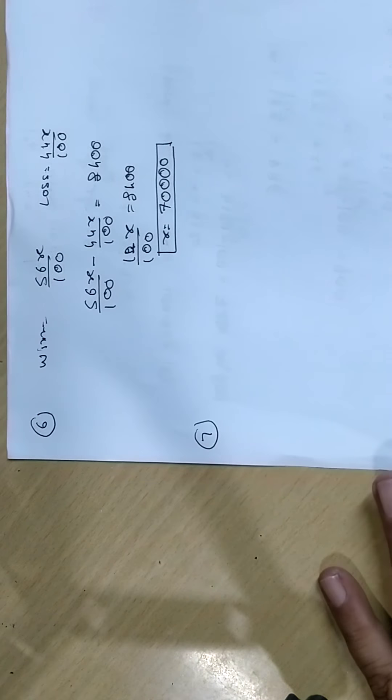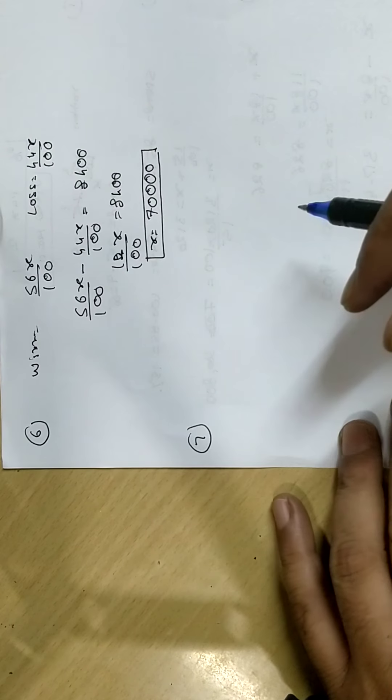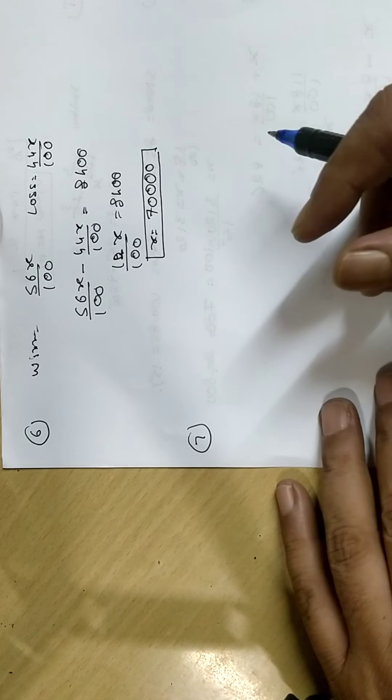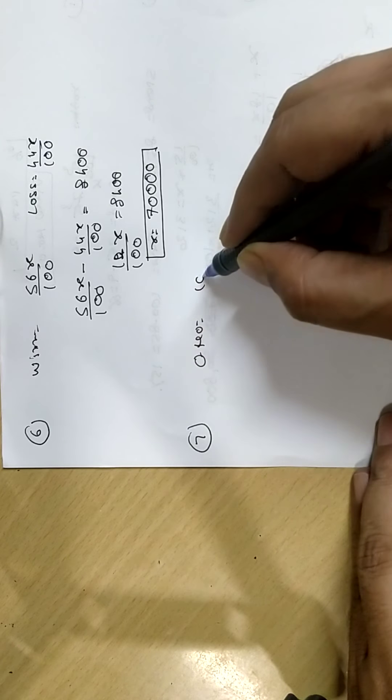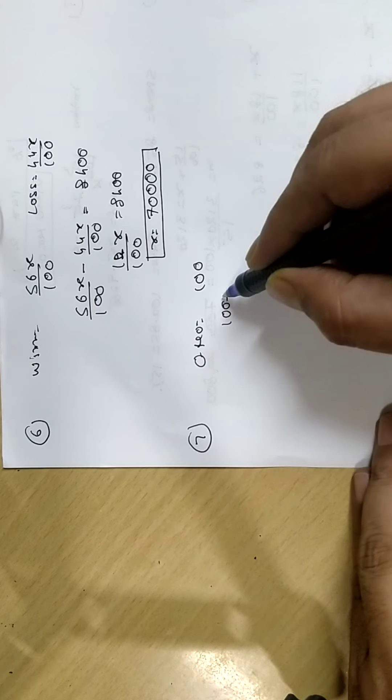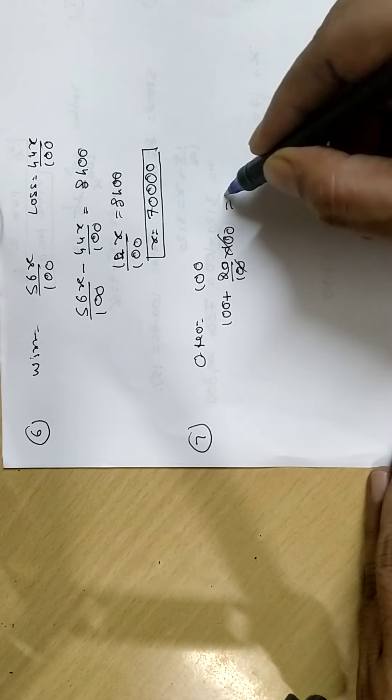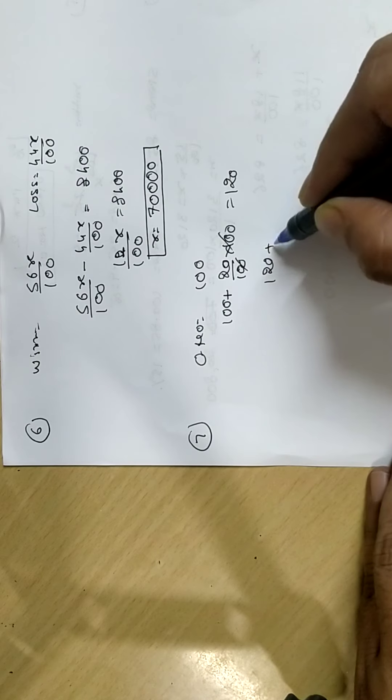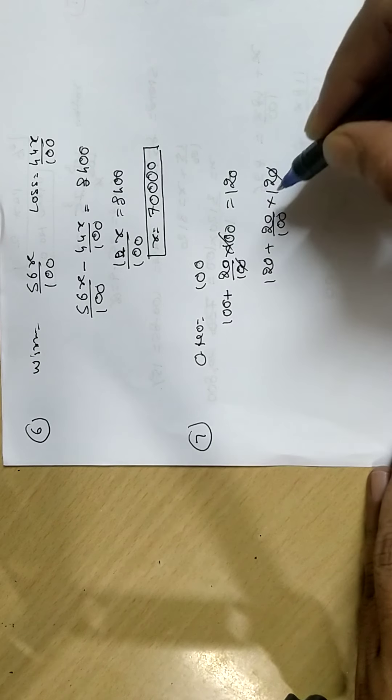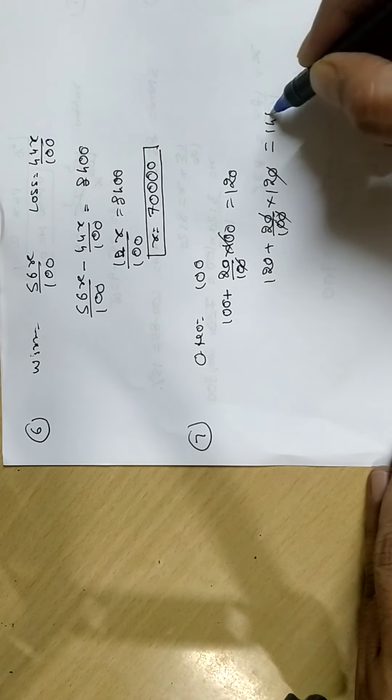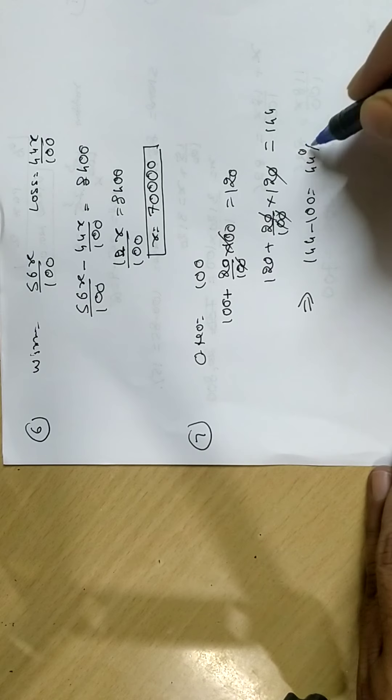Number 7. Number increased by 20%, and whatever answer you get, that again increased by 20%. So, let original number be 100. When 100 you increase by 20%, you get 120. Now, 120 you again increase by 20%, I get 144. So, total increase is 144 minus 100, that is 44%.